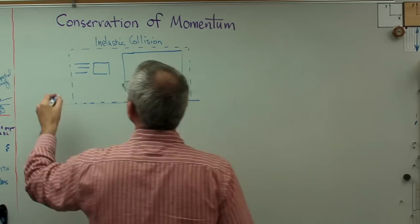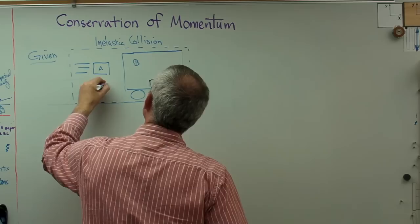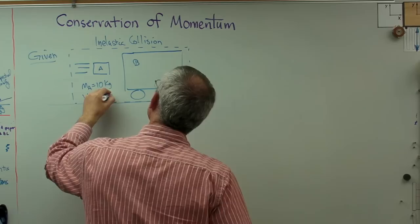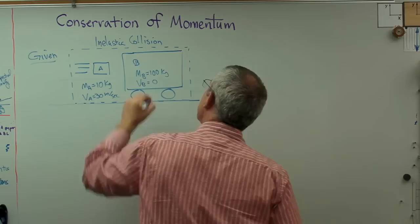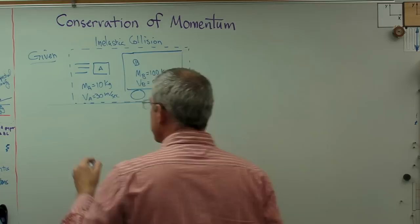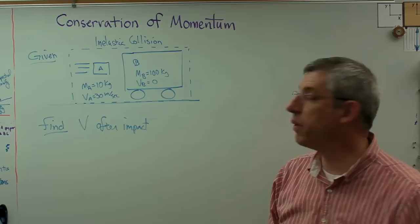Given this, let's put some numbers on this. Let's figure out what velocity is before and after the impact. I'll call this A and that B. MA will be 10 kilograms. VA is 30 meters per second, I'll just write it right on the box. MB is 100 kilograms and VB equals zero, so it starts out from a standstill. It's going to start moving once this little box hits it and sticks.